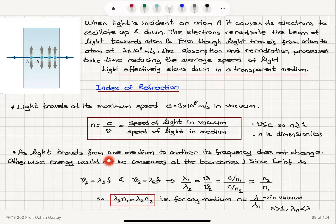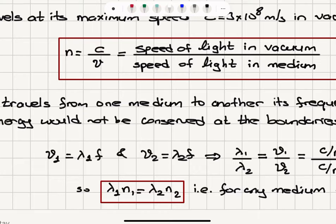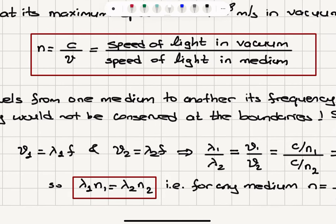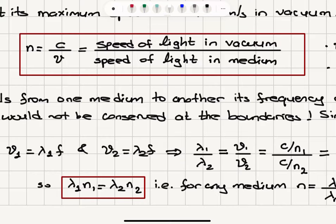As light travels from one medium to another, its frequency does not change. Why? Because from Planck, light consists of energy packets called photons each with energy hf, and conservation of energy at the boundaries tells us the frequency cannot change. Since the speed equals lambda times frequency, the speed of light in medium 1 is lambda 1 times f, and in medium 2 is lambda 2 times f. So the ratio V1 over V2 equals lambda 1 over lambda 2.